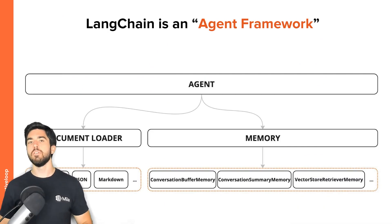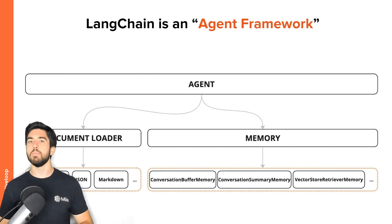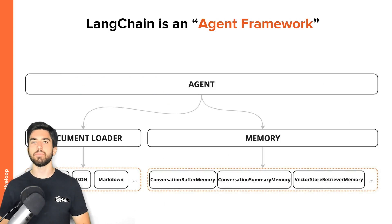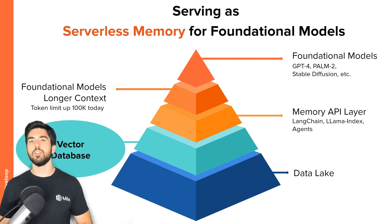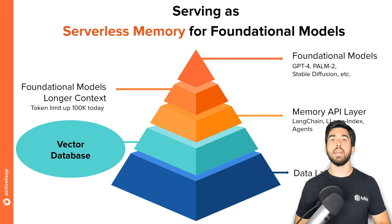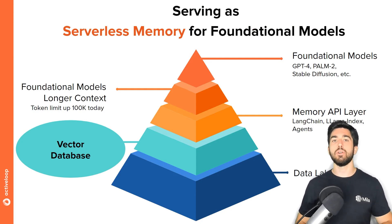Memory types in LangChain include the Conversation Buffer Memory, which allows for simple storage of past messages sequentially; the Conversation Summary Memory, which summarizes all previous messages in the conversation, managing more messages but with less accuracy; and the VectorStoreRetriever Memory, which stores all past memories in a VectorStore that can then be retrieved by similarity to the current context. These memory APIs typically work on an underlying technology called vector databases, which are databases able to store embeddings alongside items, thus allowing for similarity search.